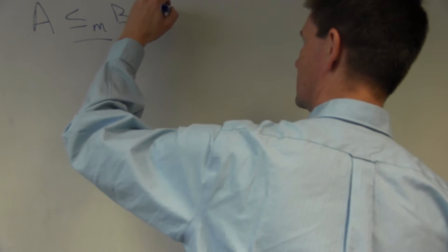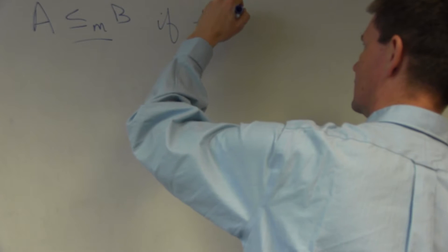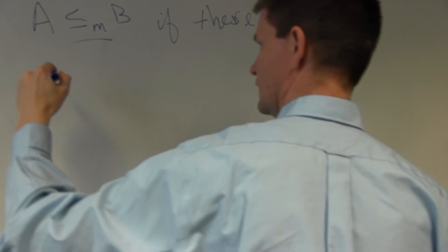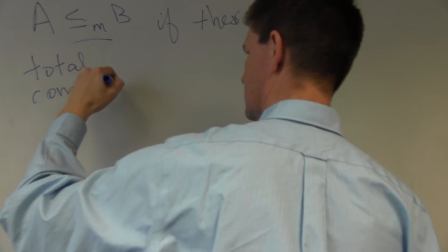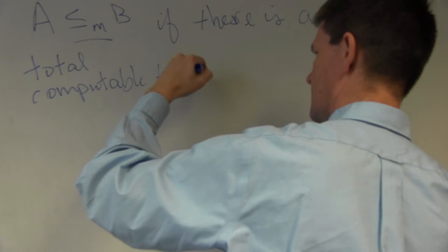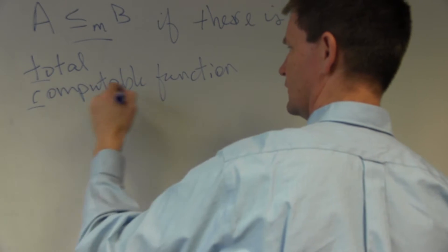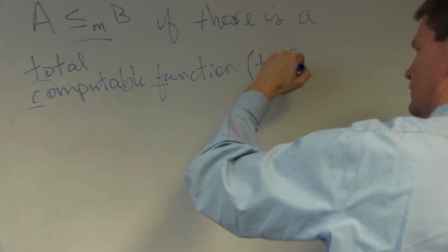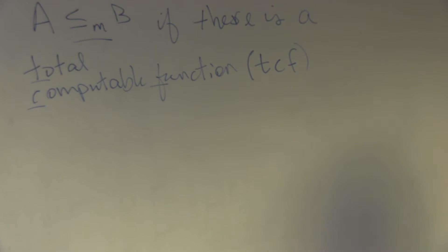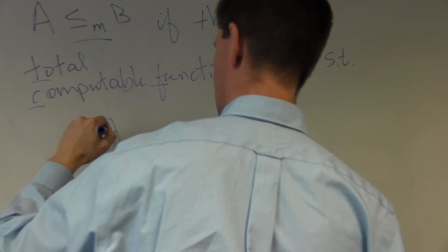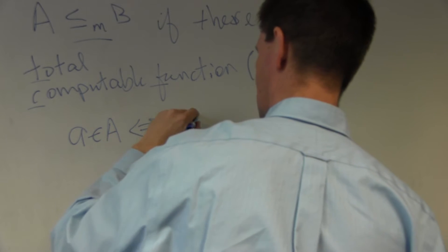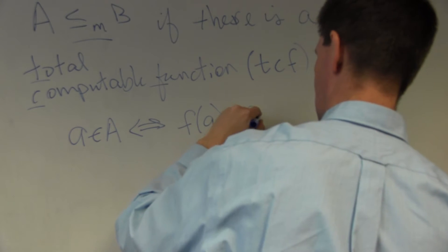Here's what it means: A is mapping reducible to B if there is a total computable function — often abbreviated TCF. So if there's a TCF from A to B, it has a special property such that little 'a' is a member of big A if and only if f of little 'a' is a member of B.